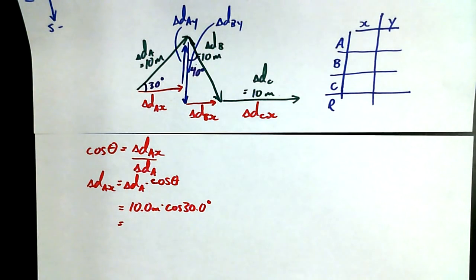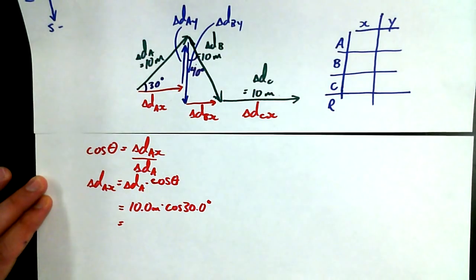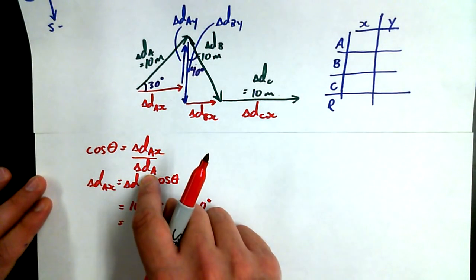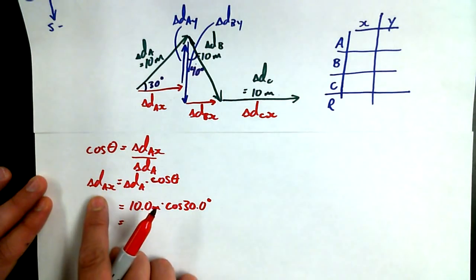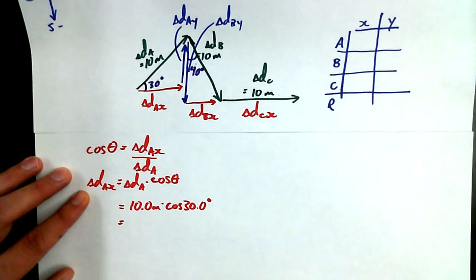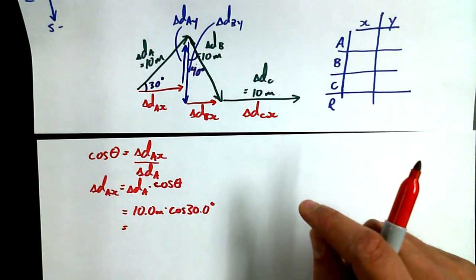Alright, so the name of the game here is to get the x components and the y components for each of our vectors. We figured out that cosine of theta for the first triangle is going to be cosine of theta equals delta dAx over delta dA. And if you rearrange to get delta dAx all by itself, because that's what we need to do to get the x component for that triangle, that is the x part of the vector that goes over to the east.